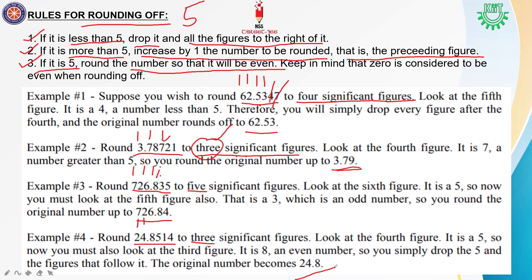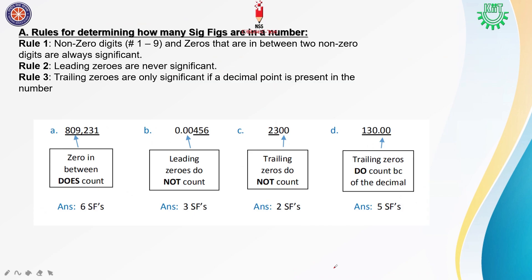Now we will see the rules for determining how many significant figures are in a number. First point: zero in between does count. If there is a zero between two non-zero significant figures, it will be counted. Like in the number shown, there is a zero between non-zero digits, so it is counted — 1, 2, 3, 4, 5, 6: there are six significant figures.